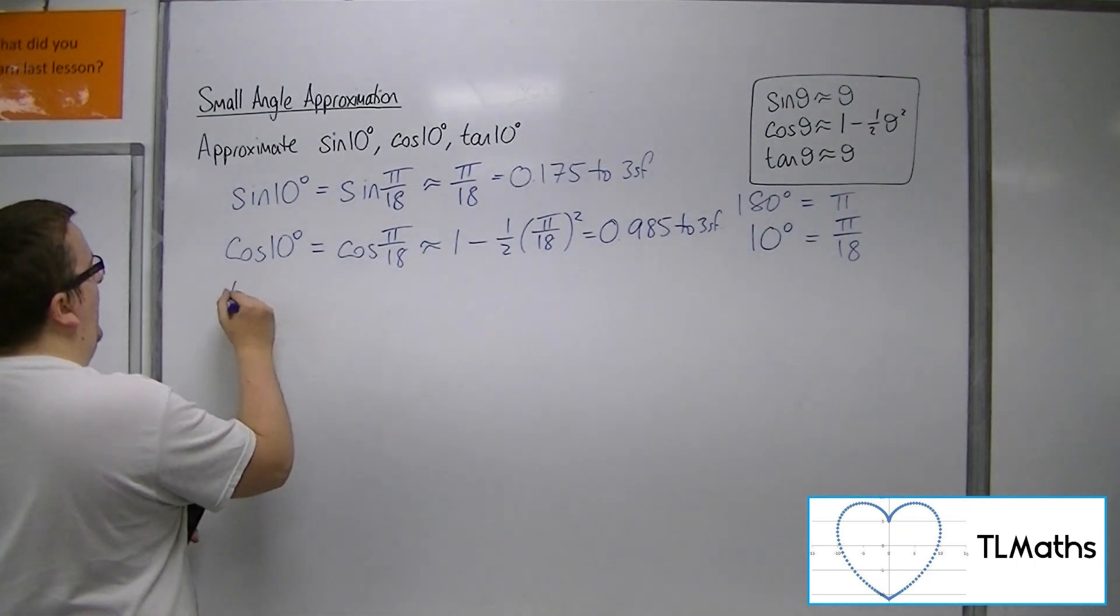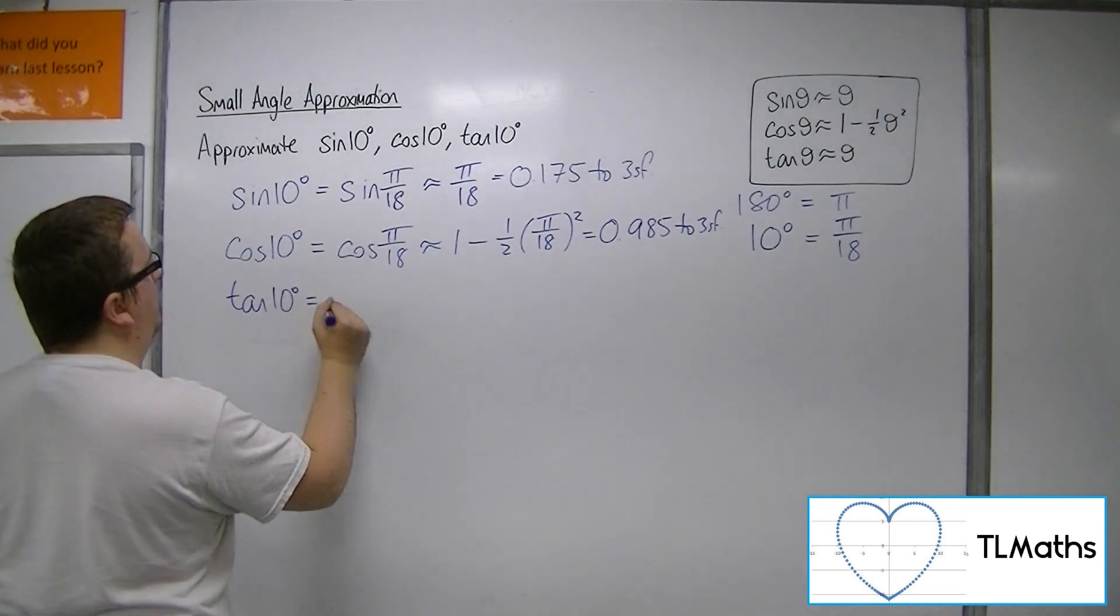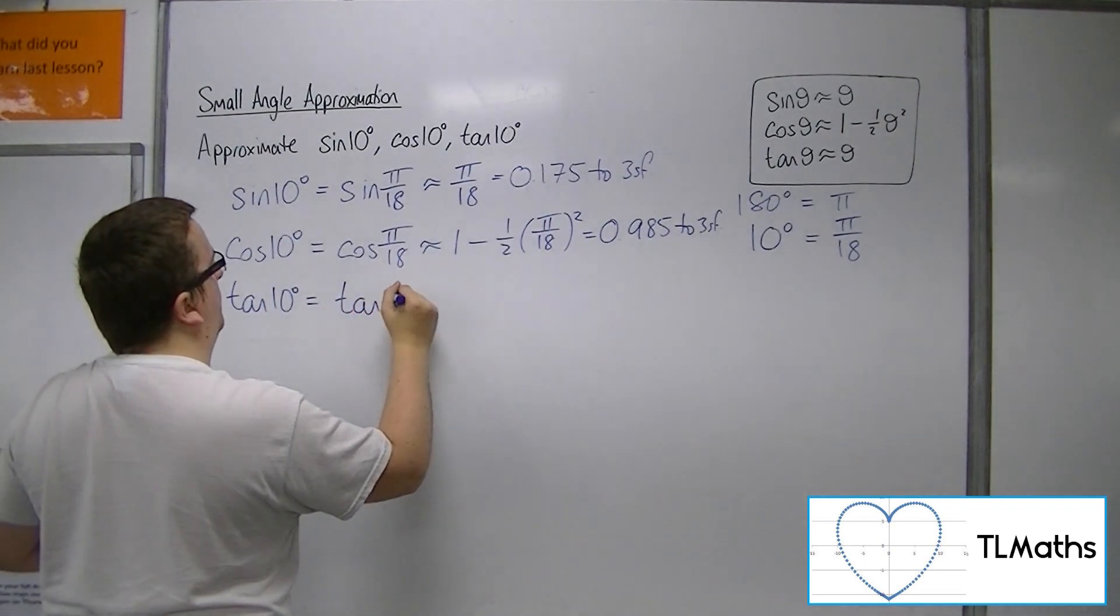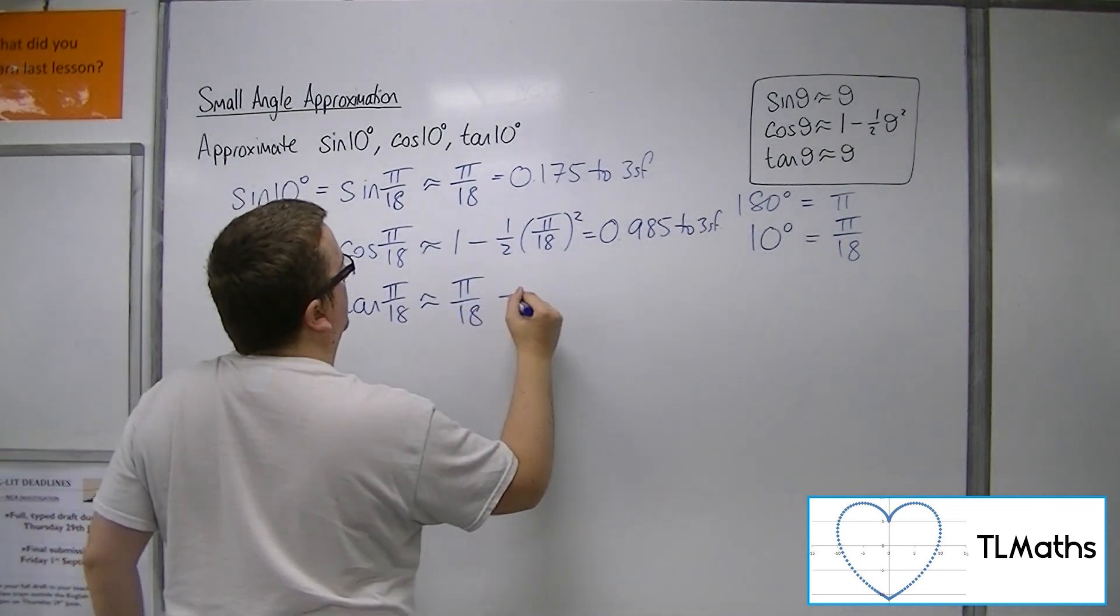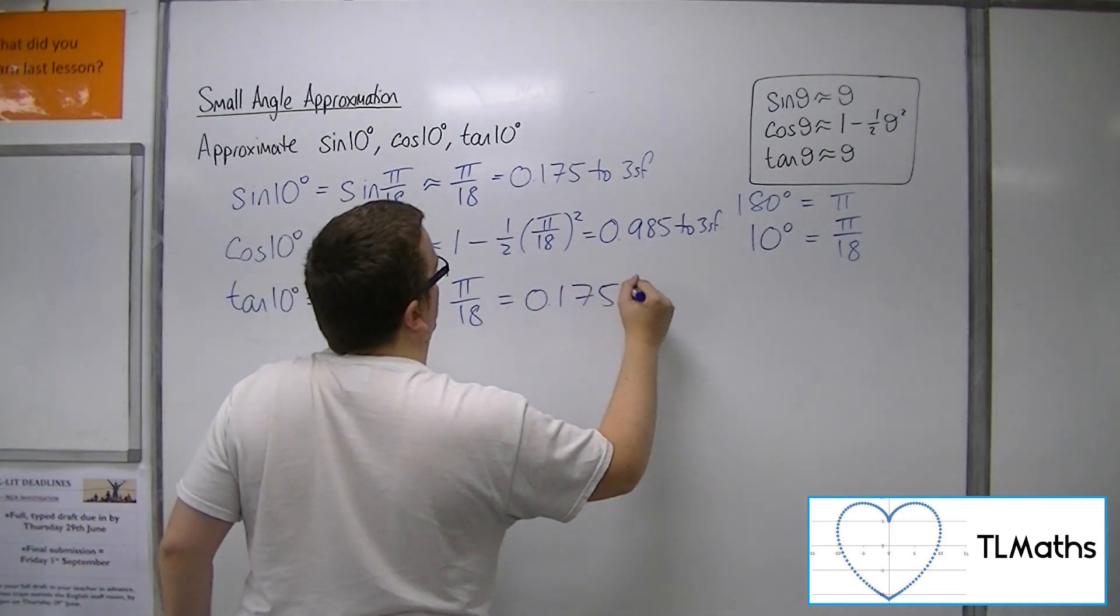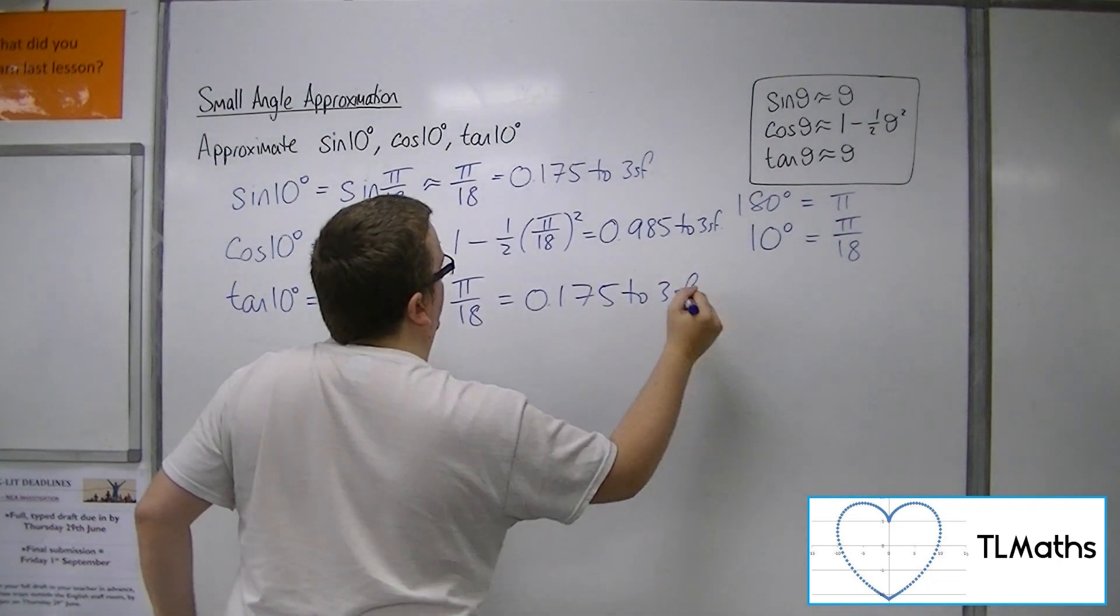And then finally, tan of 10 degrees will be tan of pi over 18 radians, which will just be pi over 18 radians again, which was 0.175 to 3 sig fig.